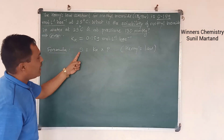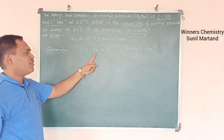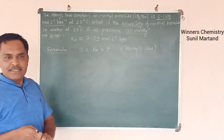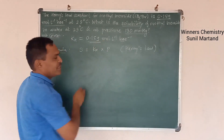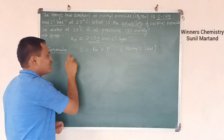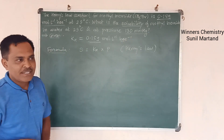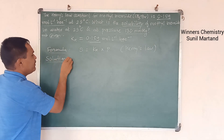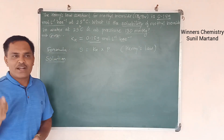We are asked to calculate the solubility. We have the Henry's law constant and the pressure. The important thing in this problem is that the Henry's law constant is given in units of bar, but we are asked to calculate solubility where the pressure is given in mmHg units. Therefore, in the solution, we have to first convert mmHg into bar.